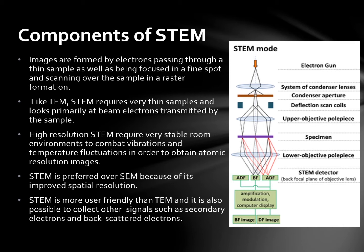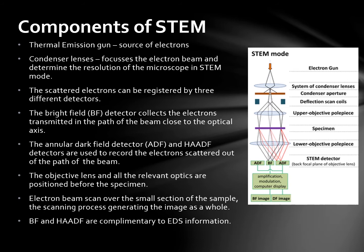The thermal emission gun is the source of the electrons. The condenser lenses focus the electron beam and determine the resolution of the microscope in STEM mode. The scattered electrons can be registered by three different detectors. The bright field detector, abbreviated as the BF detector, collects the electrons transmitted in the path of the beam close to the optical axis. The annular dark field and high angle annular dark field detectors are used to record the electrons scattered out of the path of the beam. The objective lens and all the relevant optics are positioned before the specimen, and the electron beam scans over a small section of the sample; this scanning process generates the image as a whole.